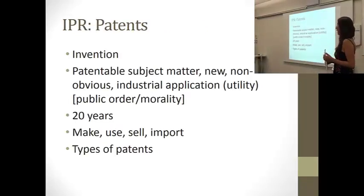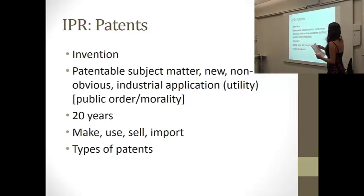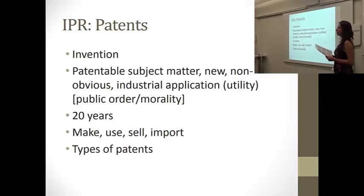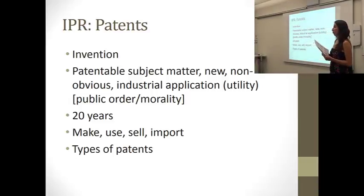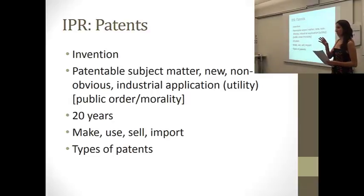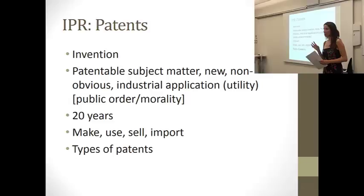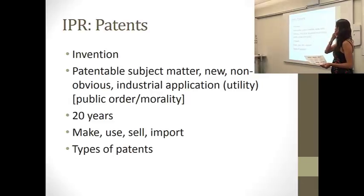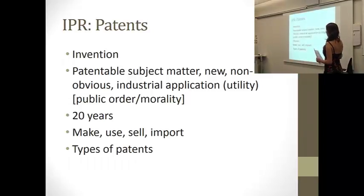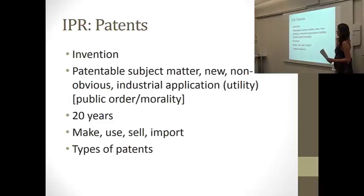Now we start with patents. Patents are granted over inventions. An invention is an art, machine, manufacture, process, product, or composition of matter that takes energy and matter as it exists in nature and transforms it for the benefit of humankind. An invention first has to fall within patentable subject matter. It has to be new, non-obvious, and have an industrial application.